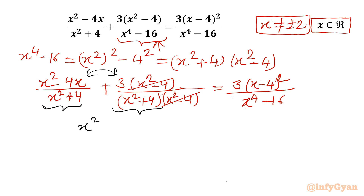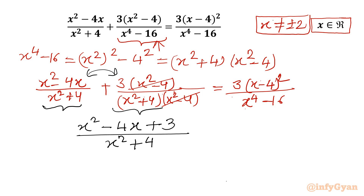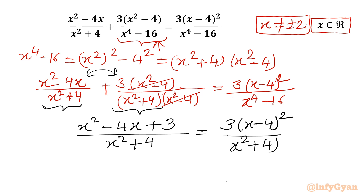So I will write: (x² - 4x + 3) divided by (x² + 4), equals 3(x - 4)² divided by x⁴ - 16. So I can write x⁴ - 16 as (x² + 4)(x² - 4). Now I can cancel the (x² + 4) denominators on both sides, since this is non-zero for real solutions.